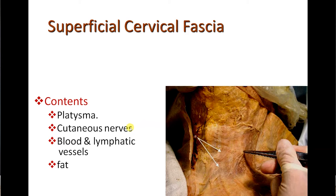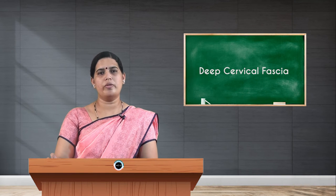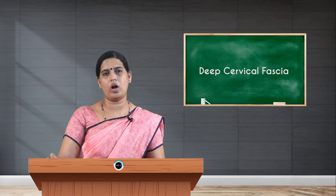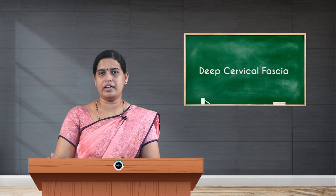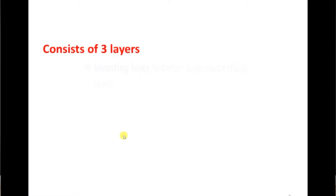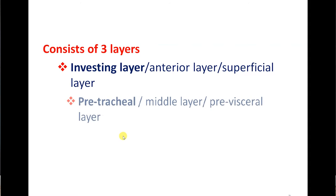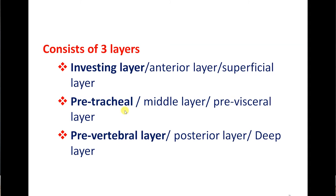Once you remove the superficial fascia, you find the deep cervical fascia of the neck, also called fascia coli. Within this, there are three divisions — anterior, middle, and posterior — giving three layers: the investing layer, the pre-tracheal layer, and the pre-vertebral layer.